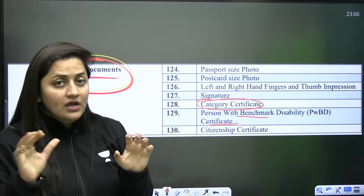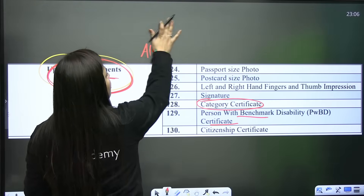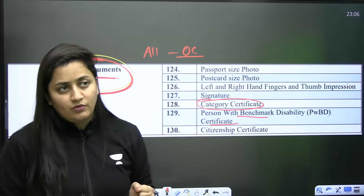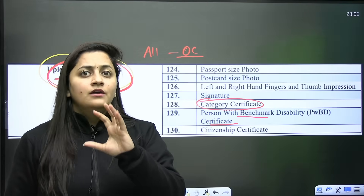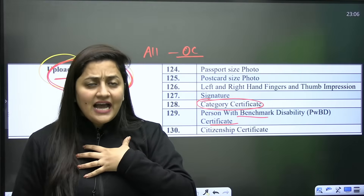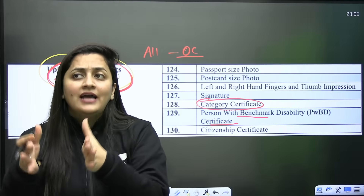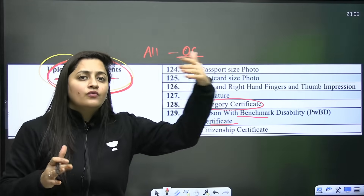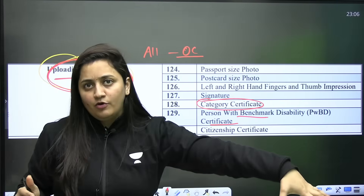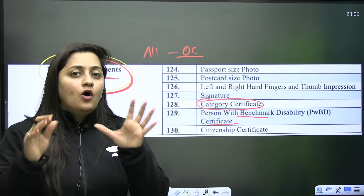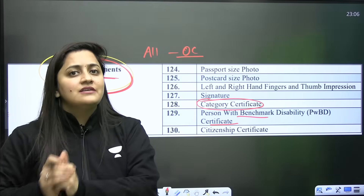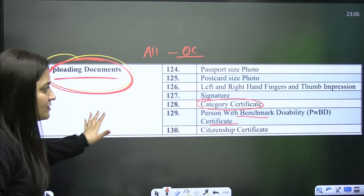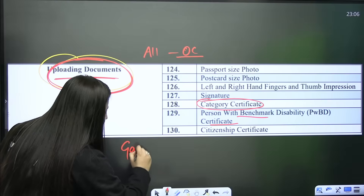One student asked: at the all-India level I belong to open category, but in the state I belong to backward classes. As per my knowledge, if you are applying for All India Quota, you will come under open category. In your state you can apply under backward classes. I'll study this more and let you know.